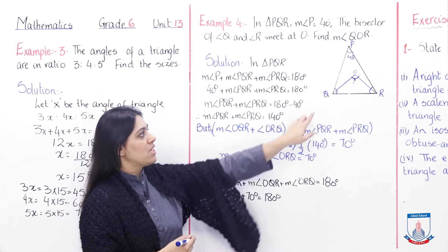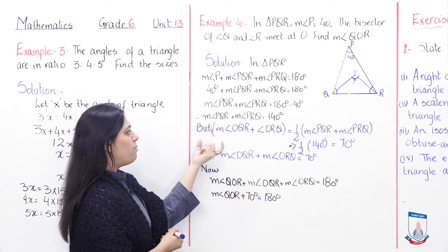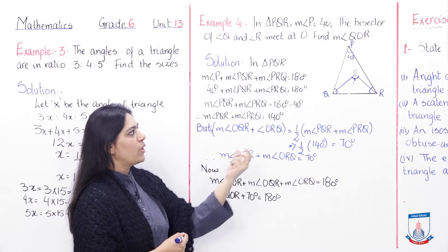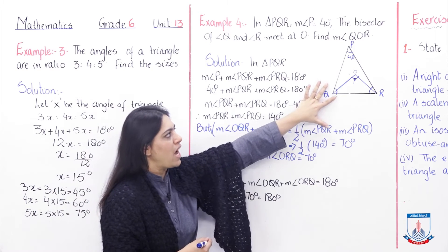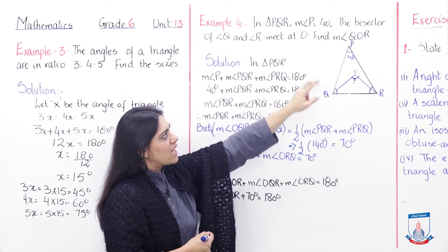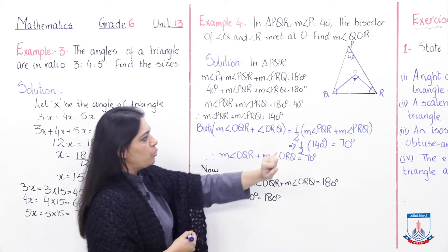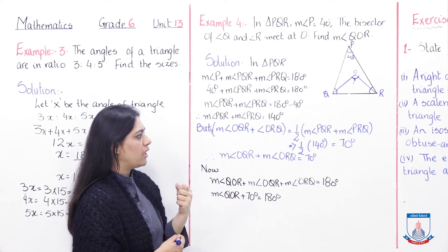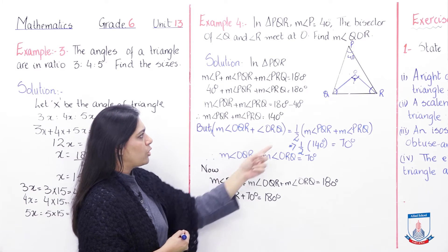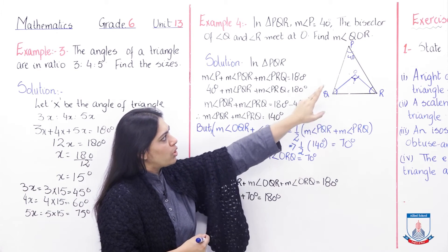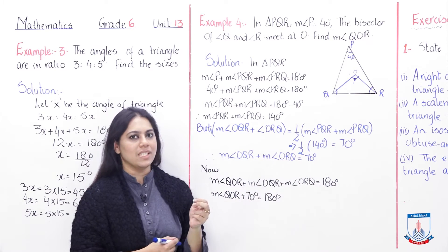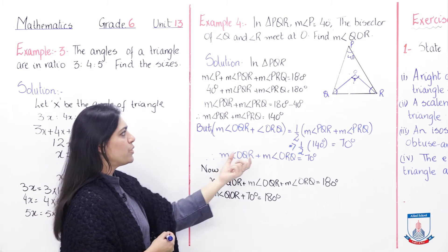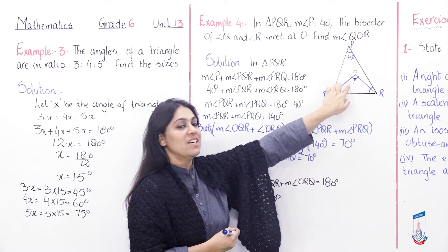Since Q is bisected at O and R is bisected at O, measure angle OQR and measure angle ORQ are each half of angles PQR and PRQ respectively. Since the combined remaining angles equal 140 degrees, measure angle OQR and measure angle ORQ each equal 70 degrees. With these values I can now find the interior triangle's angle.